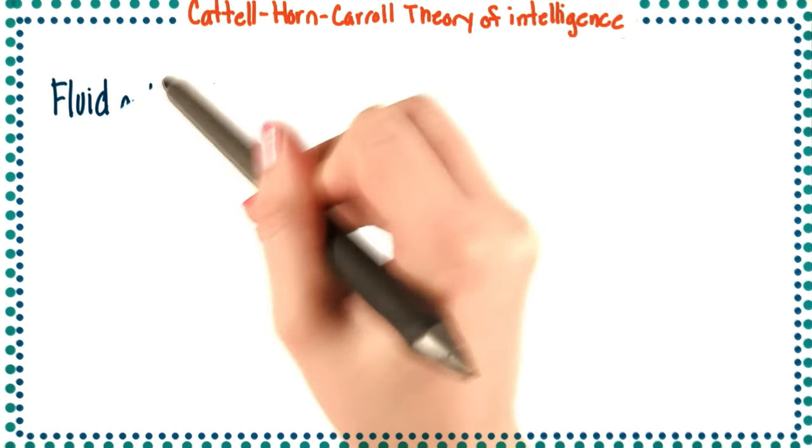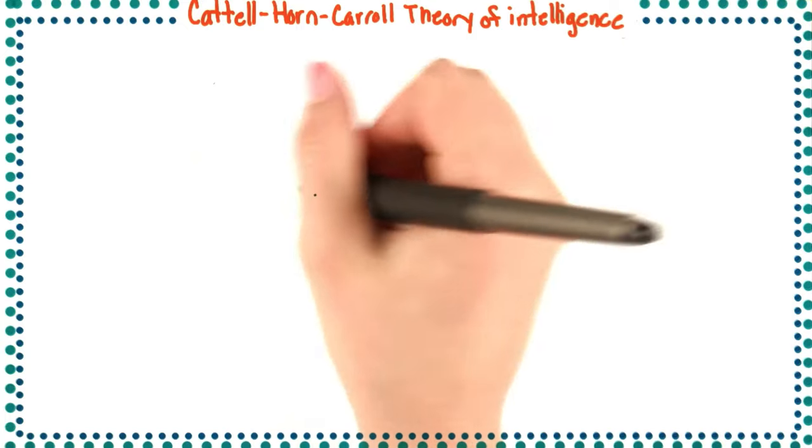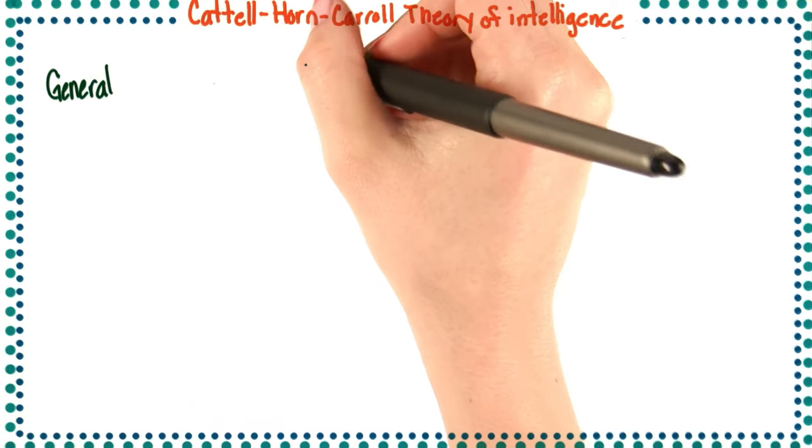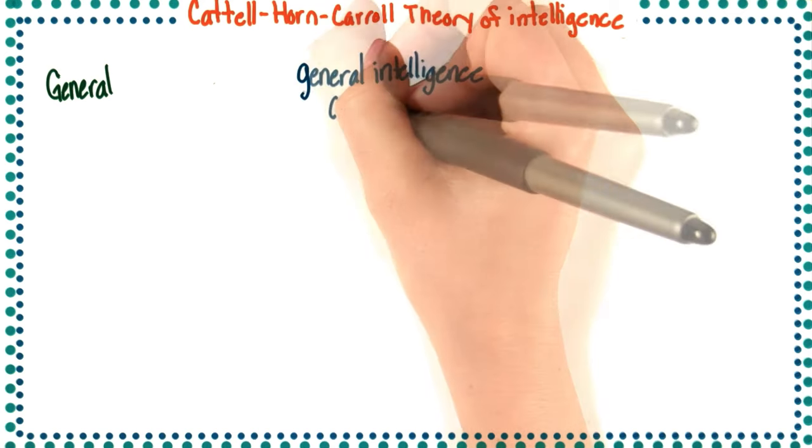Let's look at the Cattell-Horn-Carroll theory as a hierarchy. It focuses on three broad levels. The first level is the general intelligence, or the g-factor.